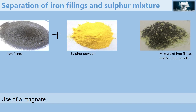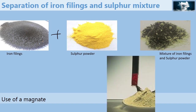In order to separate this mixture, we need to take note that iron filings can be attracted by a magnet, while sulphur powder cannot be attracted by a magnet. Substances that are attracted by a magnet are known as ferromagnetic substances. Since iron filings can be attracted by a magnet, when we bring a magnet close to the mixture, it will attract the iron filings and not the sulphur powder, and eventually we separate, as we can see in this diagram.